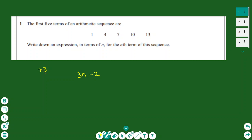So you start by writing 3n. The multiples of 3 normally start from 3, then 6, 9, 12. My sequence starts from 1, not 3. So I need to make an adjustment of minus 2, and now 3n minus 2 becomes the nth term of the sequence.